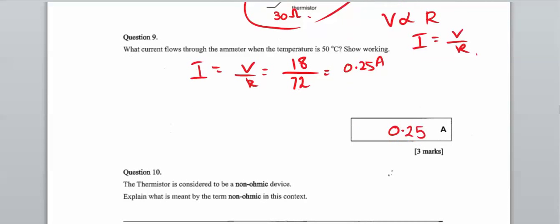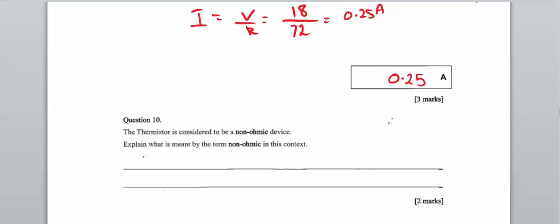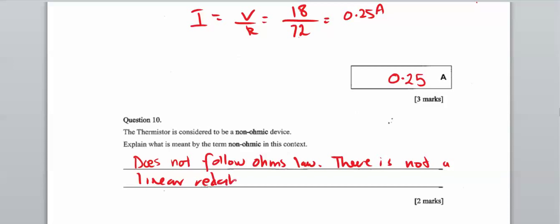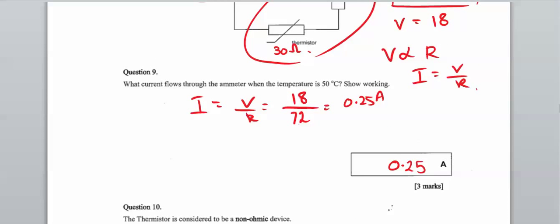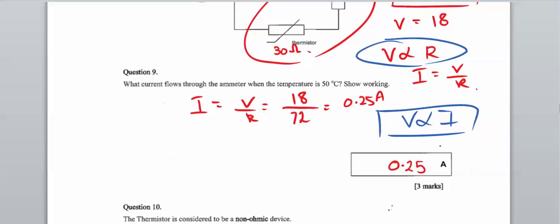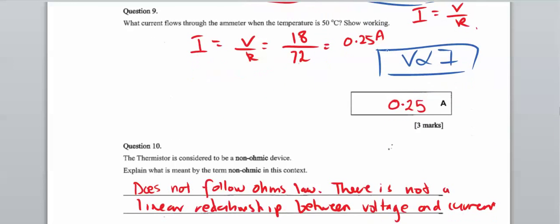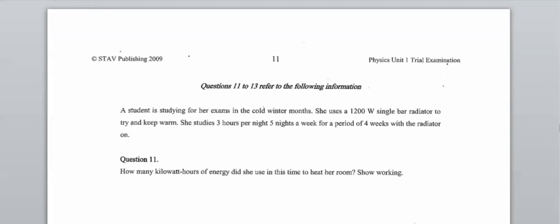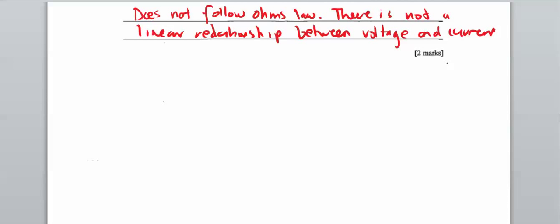If the thermistor is considered a non-ohmic device, what is meant by non-ohmic in this context? It does not follow Ohm's law — there is not a linear relationship between voltage and current. For a non-ohmic device, doubling the current does not double the voltage in a consistent way. Non-ohmic devices do not have a linear voltage-current relationship.